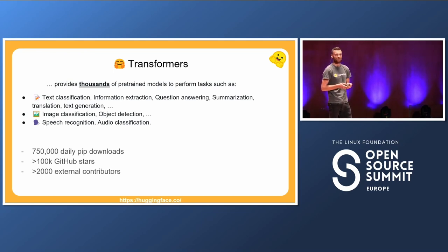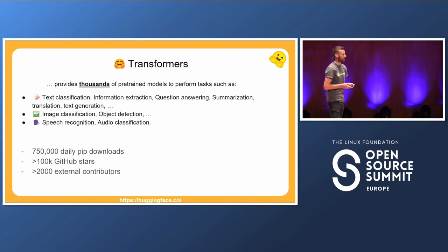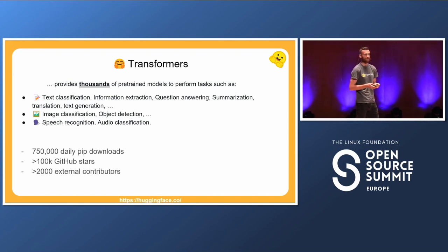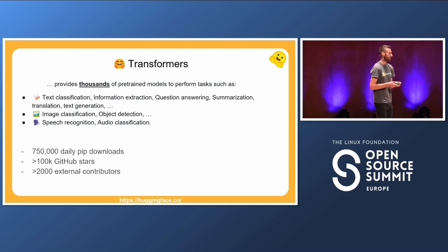We cover object detection, and we're also in audio now — very present with speech recognition models like Whisper and Wav2Vec2, as well as audio classification. Transformers is highly used: it has up to 750,000 daily pip installs, which is more or less the same as PyTorch or almost TensorFlow. We're over 100,000 GitHub stars, and since about two weeks ago we have over 2,000 external contributors — quite an active and highly used library.